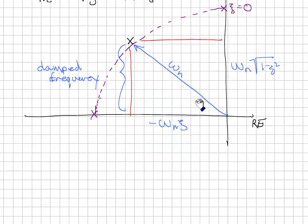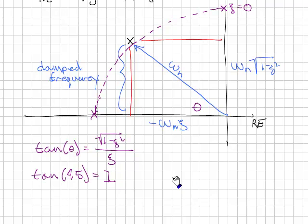Sometimes people look at this angle here, and you can calculate that angle. Tangent of θ equals √(1 - ζ²) / ζ. And an interesting point is what happens at 45 degrees. This is 1, and so you can show that ζ must be equal to 1/√2, or 0.707. And that's a common damping ratio that people use, and it corresponds to a pole that lies on a 45 degree from the origin. So any pole along this line has a damping ratio of 0.707.